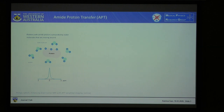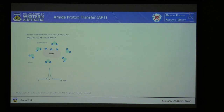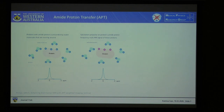A brief explanation of the physics behind it: the proteins in tumour cells have hydrogen atoms attached to them. These can also be thought of as just protons. These protons transfer and exchange with the hydrogen atoms on the water molecules that surround them. The first step is to measure the normal water signal using magnetic resonance techniques. Then we apply a radiofrequency pulse at the amide hydrogen's resonant frequency, and the hydrogen atoms become saturated.